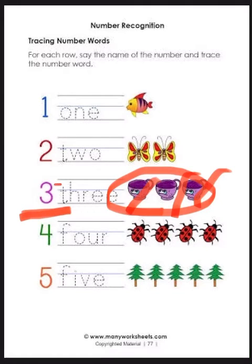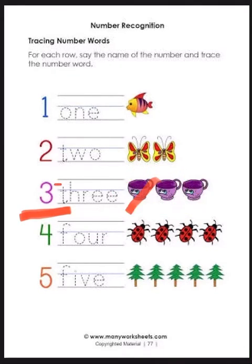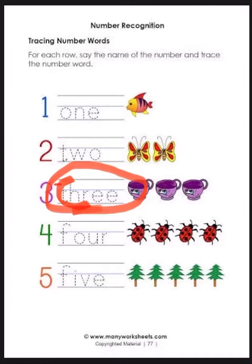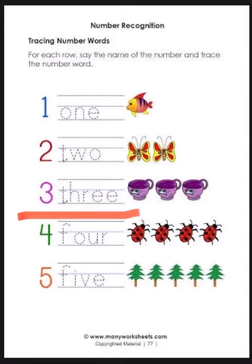So we will write three like this. Now say the spelling of three: T-H-R-E-E, three. Say it again: T-H-R-E-E, three.